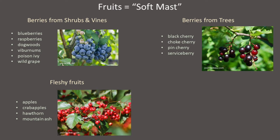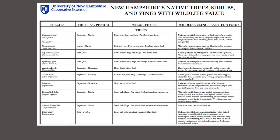You should become familiar with these plants and learn which species grow in upland or wetland habitats. One resource published by UNH Cooperative Extension is called New Hampshire's Trees, Shrubs, and Vines with Wildlife Value. You can find this resource easily by Googling it, and a link is included in the description of this presentation.